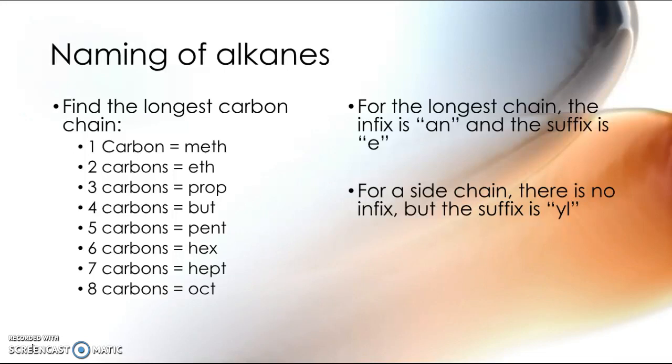With alkanes, if you've only got carbon and hydrogen and nothing else going on, then the infix is always going to be "an" and the suffix will be "e" - so alkane, hexane, heptane, octane, etc. If your alkane group is a side chain, then you'll name it the same way but with no infix and the suffix is "yl". So a 2 carbon side chain would be ethyl, a 4 carbon side chain would be butyl, etc.